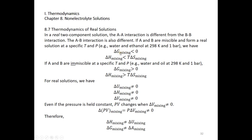That means this mixing is spontaneous at constant T and P condition. And because G is equal to H minus TS, at this temperature, delta H mixing is less than T times delta S mixing.